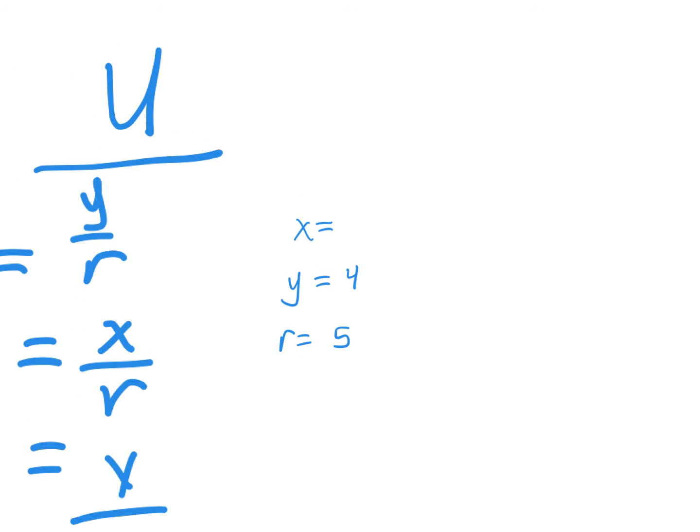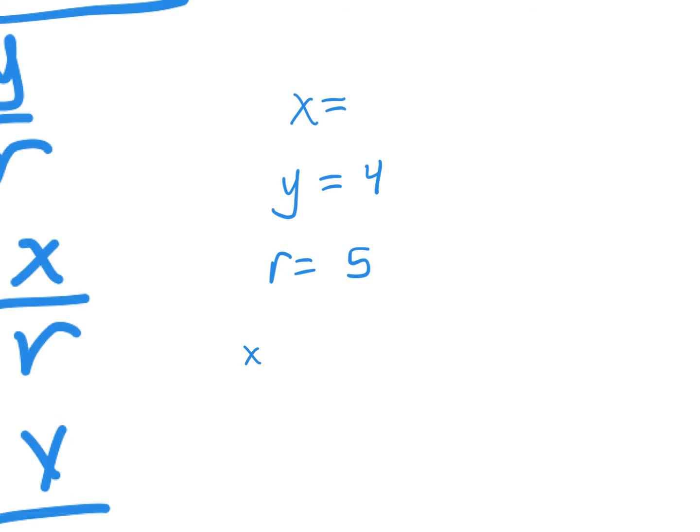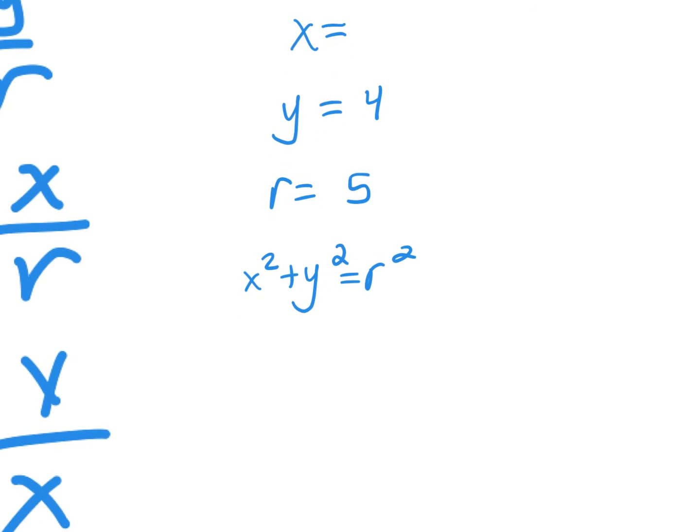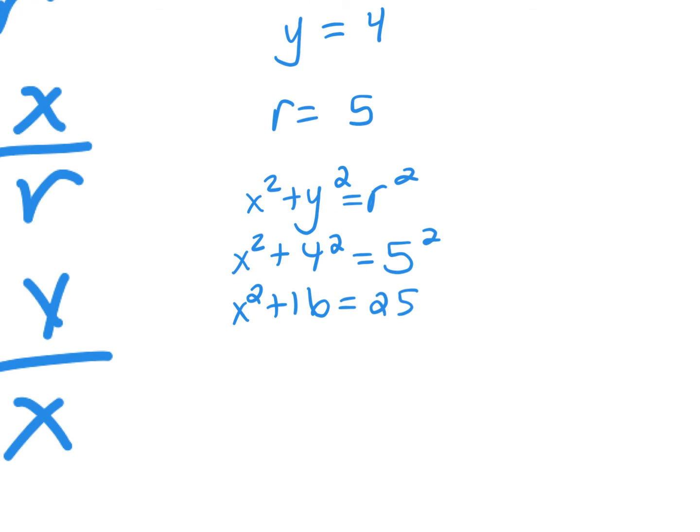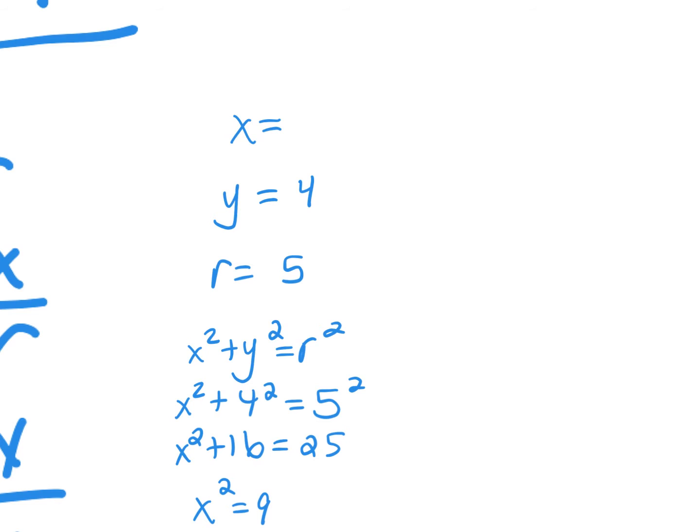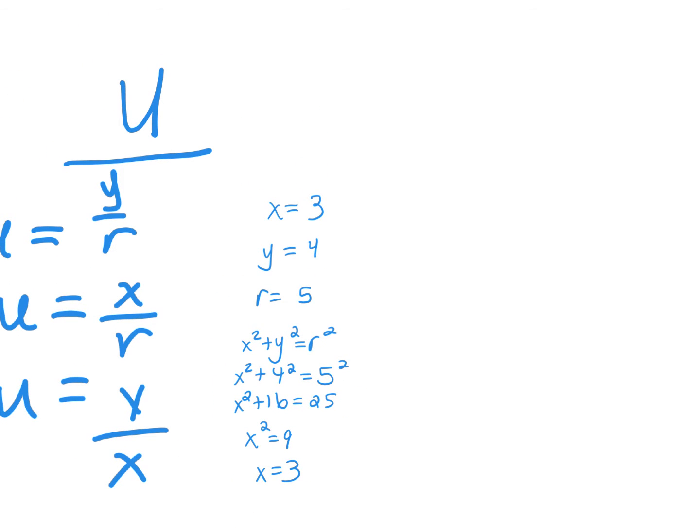So in order to find my X value, remember, it's X squared plus Y squared equals R squared. I don't know what X is. I do know that Y is 4, so 4 squared equals 5 squared. X squared plus 16 equals 25. When I subtract 16 from both sides, I get X squared equals 9. So X is 3. That's pretty much the hardest math you're going to have to do throughout this.